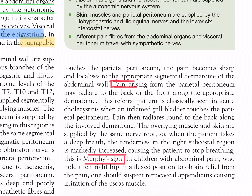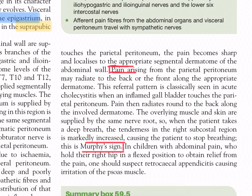Pain arising from the parietal peritoneum may radiate to the back or front along the appropriate dermatome. This referral pattern is classically seen in acute cholecystitis when an inflamed gallbladder touches the parietal peritoneum — pain then radiates round to the back along the involved dermatome. The overlying muscle and skin are supplied by the same nerve root, so when the patient takes a deep breath, the tenderness in the right subcostal region is markedly increased, causing the patient to stop breathing. This is Murphy's sign. In children with abdominal pain who hold their right hip in flexion to obtain relief, one should suspect retrocecal appendicitis causing irritation of the psoas muscle.